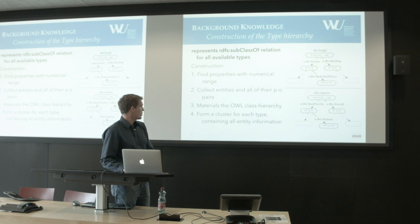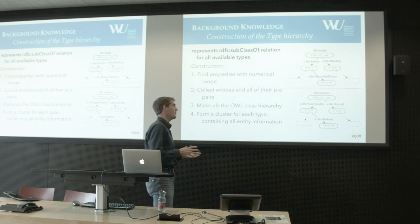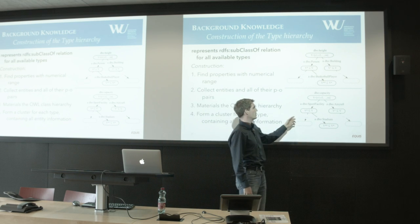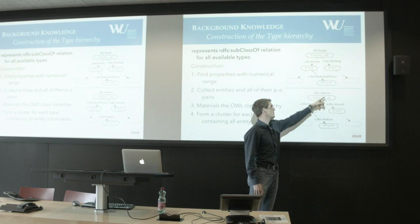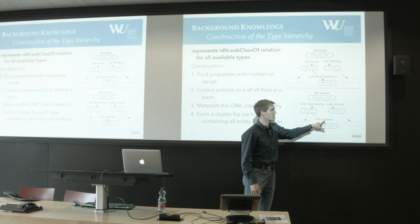Another example is capacity: we have sports facilities and aircraft as types. For sports facilities, we have stadium as a specific subtype. Each cluster contains the numerical values of entities for a given property and type — for example, the capacity values of entities of type stadium.